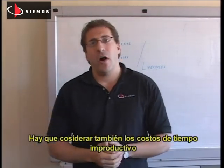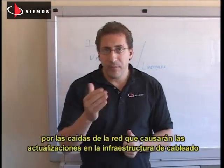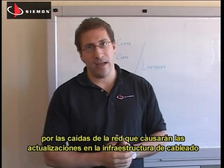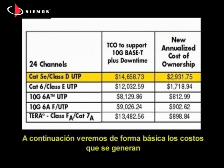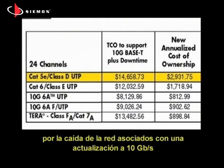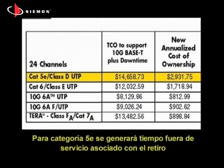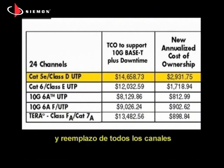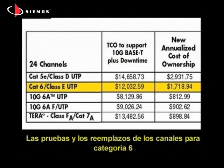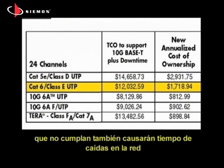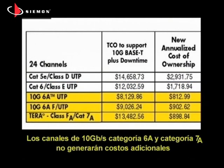We all know the rise in costs of network downtime, and upgrading a cabling system will create downtime. The following provides a basic look at downtime costs associated with an upgrade to 10 gigabit cabling. Category 5E will incur downtime associated with removal and replacement of all channels. Testing and replacement of non-compliant Category 6 channels will also cause downtime. As before, 10 gigabit capable Category 6A and Category 7A channels will incur no additional costs.